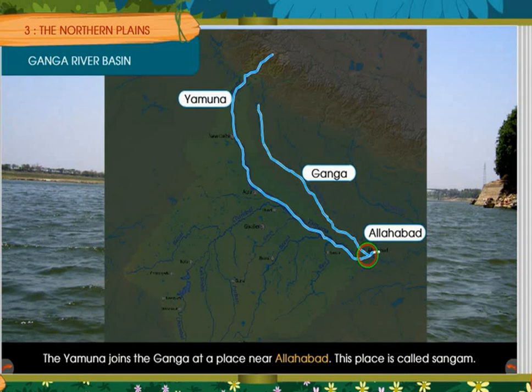Rivers in our country are considered holy and worshipped. Many cities are located on river banks, such as Varanasi, Rishikesh and Haridwar, which are considered holy places. This concludes the Ganga river basin. In the next class, we will learn about the Brahmaputra river basin.